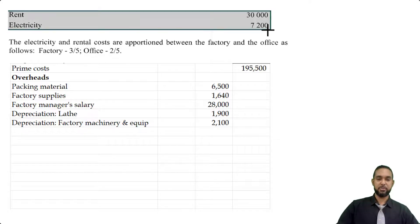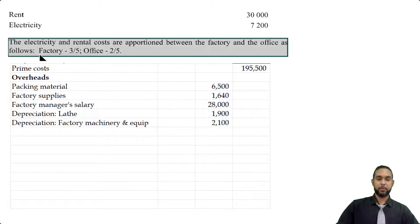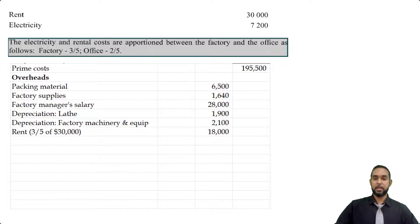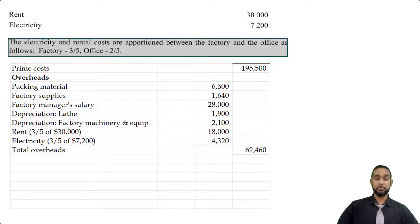Don't forget rent and electricity. Rent is $30,000 and electricity is $7,200, but they must be split three-fifths to the factory and two-fifths to the office. So three-fifths of $30,000 gives us $18,000 for rent, and three-fifths of $7,200 gives us $4,320 for electricity. The total for factory overheads is $62,460, and adding that to the prime cost of $195,500 gives us $257,960.